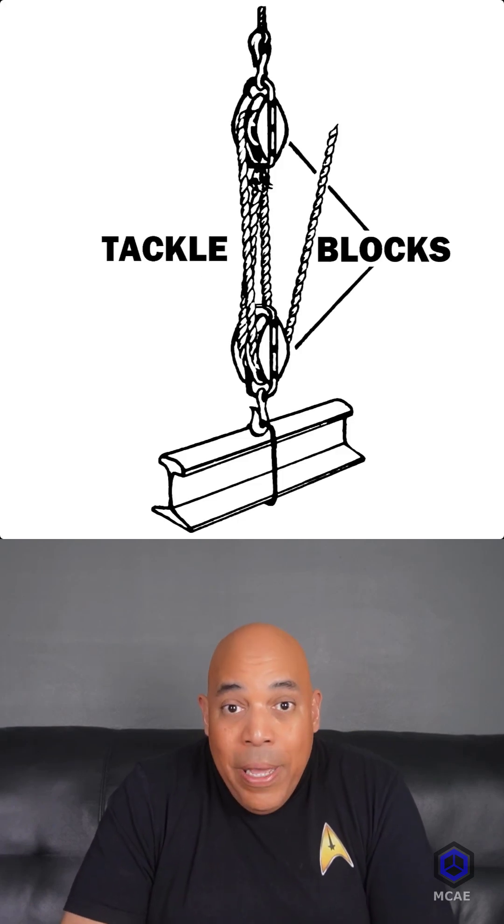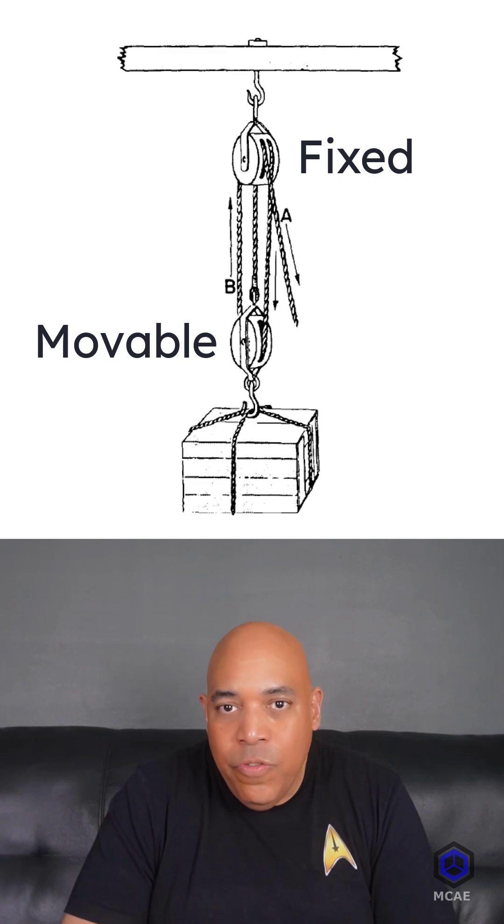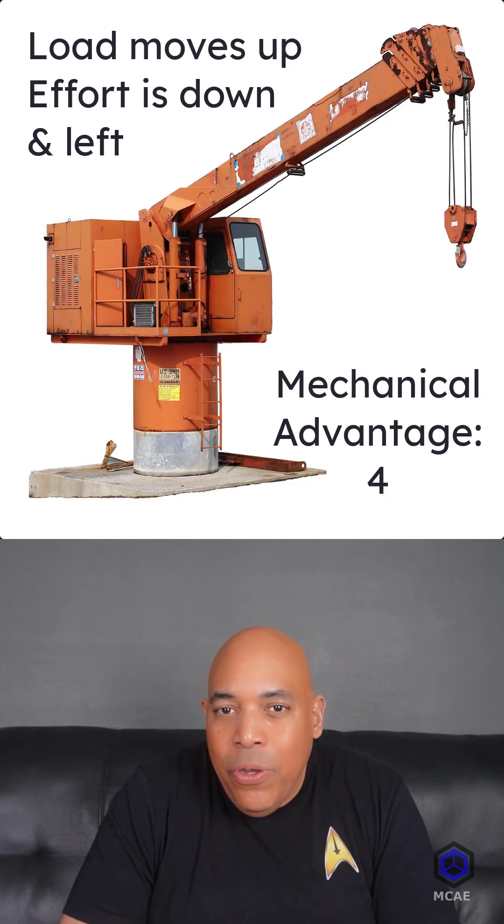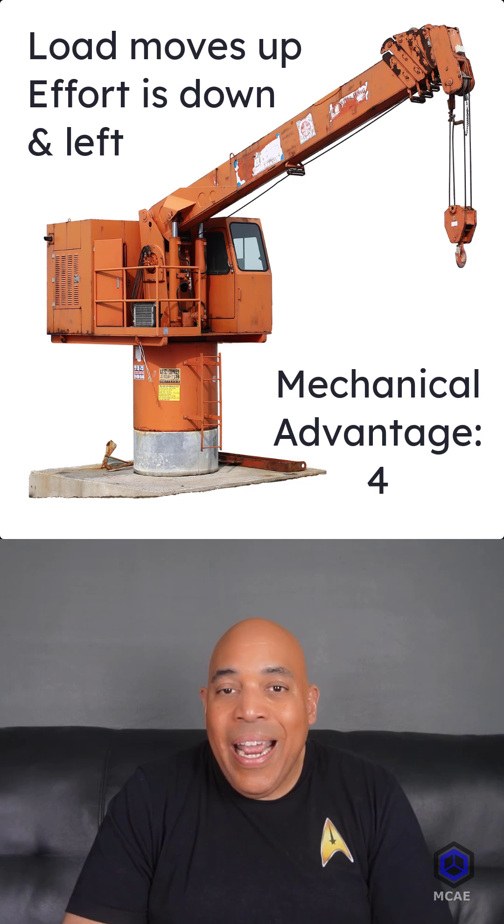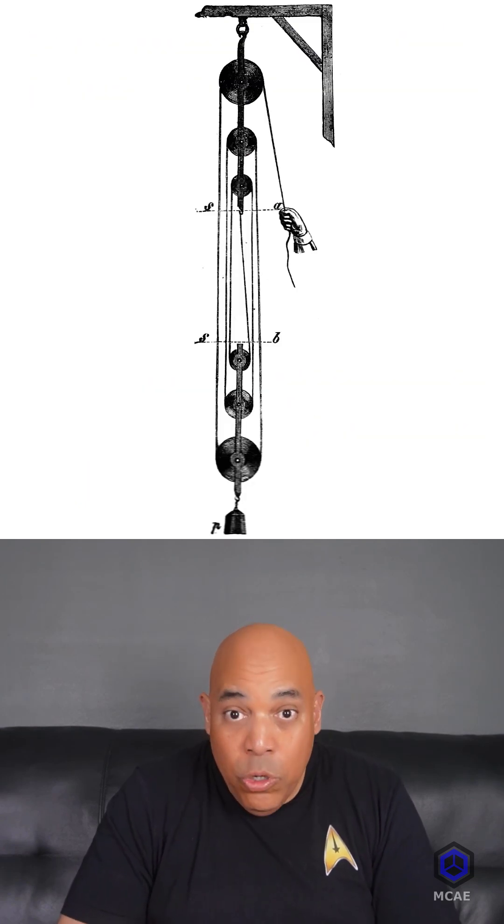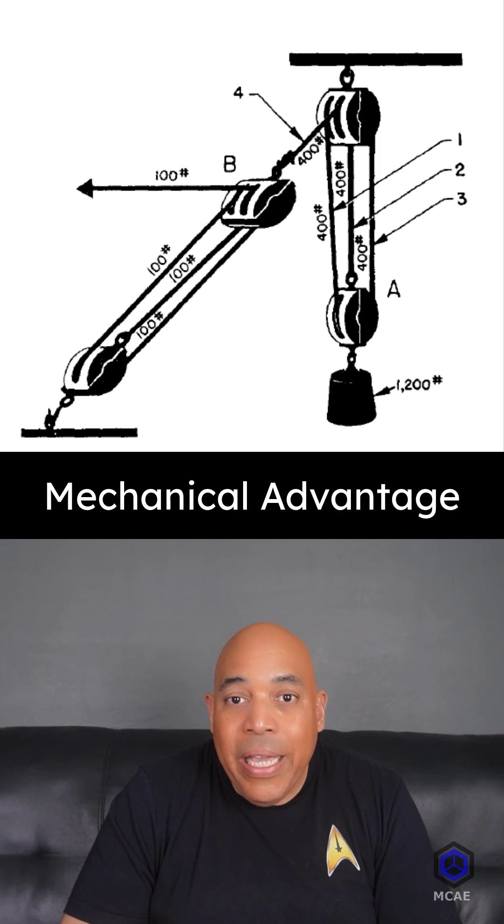A compound pulley, also known as a block and tackle, consists of fixed and movable pulleys. It both changes the direction and multiplies the effort. There can be multiple wheels on both the fixed and movable portions. The mechanical advantage can be estimated by counting the number of ropes supporting the load.